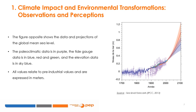The figure opposite shows the data and projections of the overall mean sea level. It shows that over the last three centuries the level has continued to increase. The paleoclimatic data is in purple, the tide gauge data is in blue, red, and green, and the altimeter data is sky blue. All values are relative to pre-industrial values and are expressed in meters.